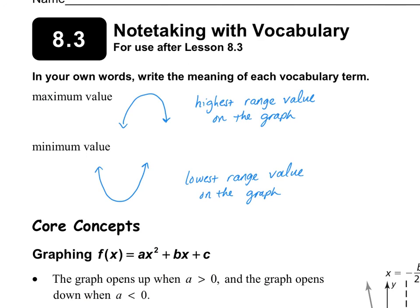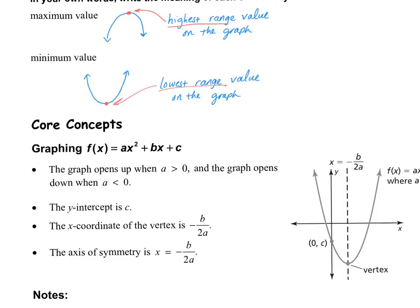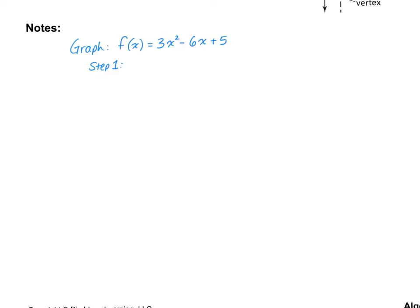On the next page we have the highest value and the lowest value — the maximum and the minimum. The maximum value is the highest range value at the top of the graph when you have an upside-down graph. The minimum is the lowest one, when you have a normal U shape. We're going to do a practice graph: graphing the function 3x squared minus 6x plus 5. The basic equation is ax squared plus bx plus c, so a equals 3, b equals negative 6, and c equals 5.